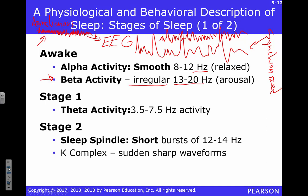Some of you might slip into alpha activity — that relaxed state around 8 to 12 Hz. You're sitting on the couch, spacing out a little bit. Someone asks 'were you asleep?' and you say no, but you weren't really active either. From there we move into stage one sleep with theta activity, around 3.5 to 4 Hz — starting to synchronize, starting to unplug from the environment.